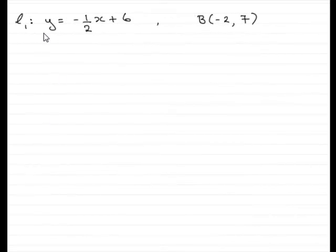Now in this part of the question we've already established that the line L1 is such that y equals minus a half x plus 6, and we've got to show that this point B(-2, 7) lies on the line L1.